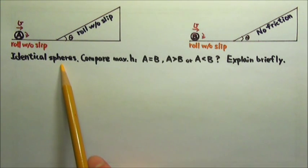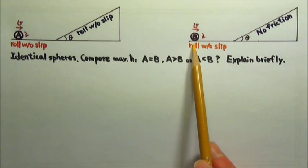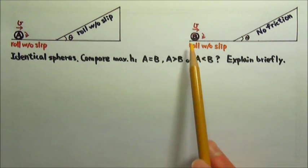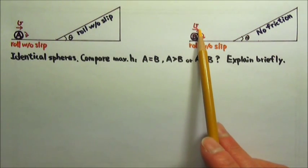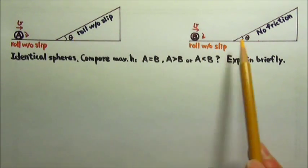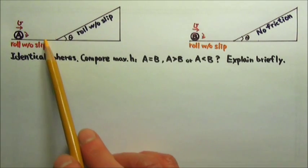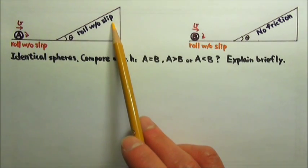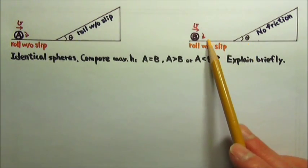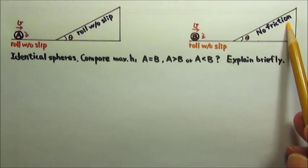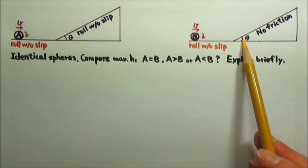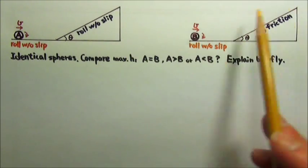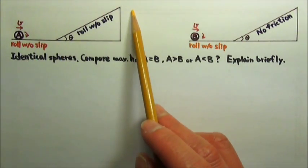Two identical uniform spheres A and B roll without slipping along two horizontal surfaces at the same speed. They each approach an incline. Sphere A rolls without slipping up an incline, and sphere B goes up a frictionless incline. Both inclines have the same angle and are tall enough so that the spheres do not go over the top.